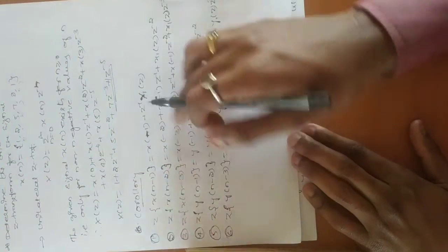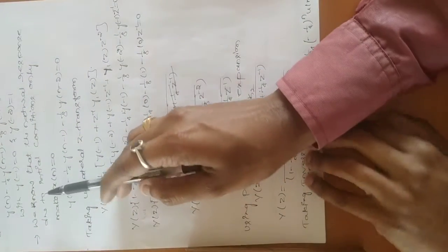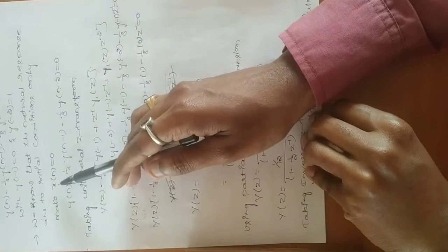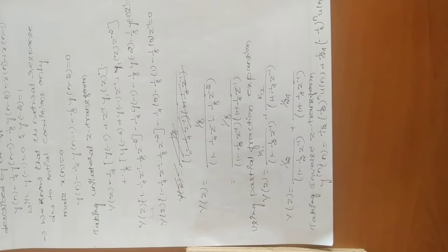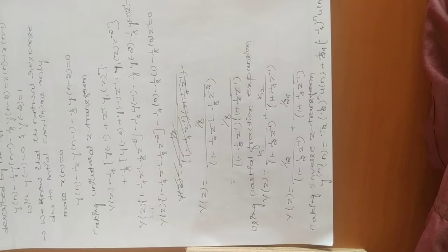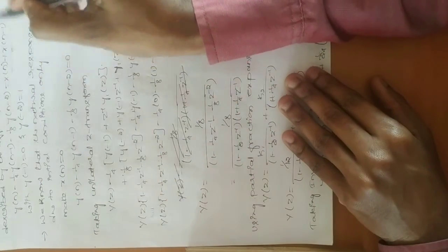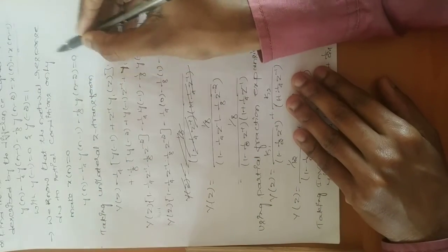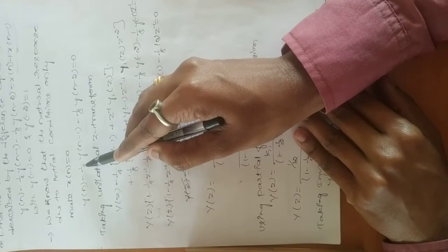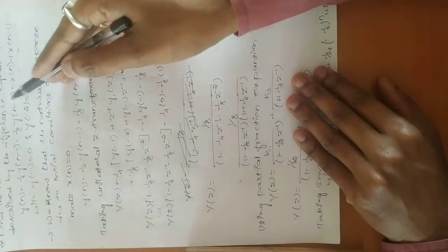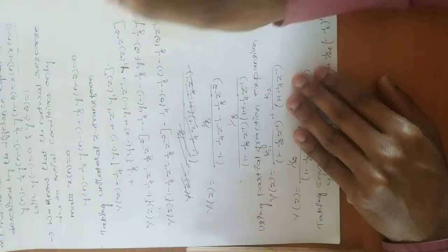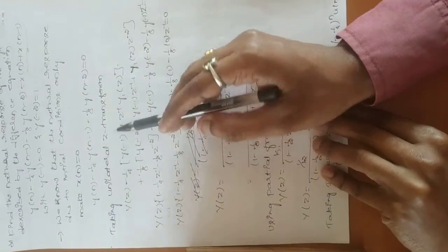For the natural response, we consider initial conditions only, so we make x(n) = 0. The right-hand side becomes 0. The equation becomes y(n) - (1/4)y(n-1) - (1/8)y(n-2) = 0. Now take the unilateral Z-transform of this equation.